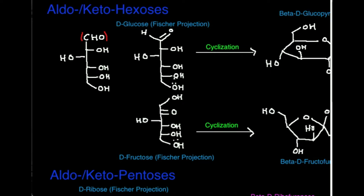Let's talk about the aldohexoses first. This is for aldohexoses in general — we could be dealing with mannose or galactose as well. When you count the number of carbons, we have one, two, three, four, five, six. The reason it gets the name hexose is because there are six carbons.